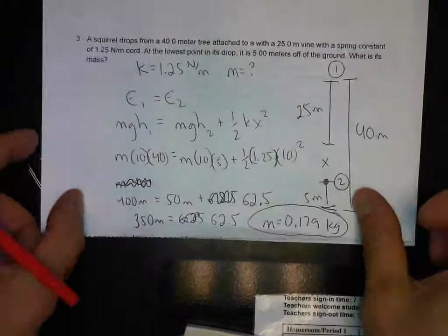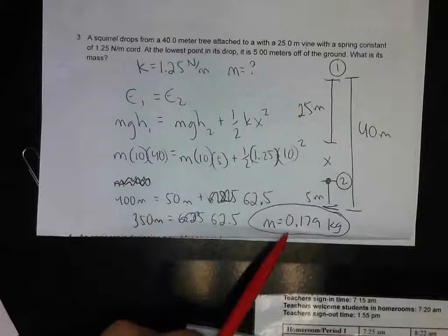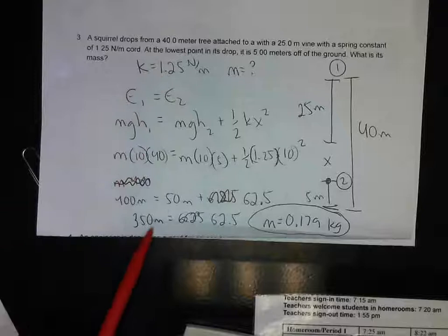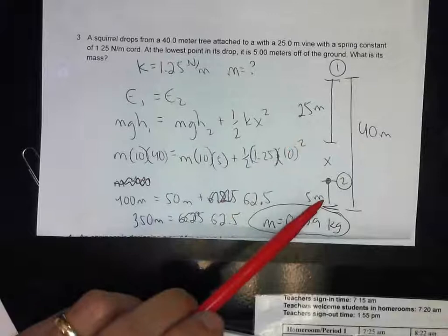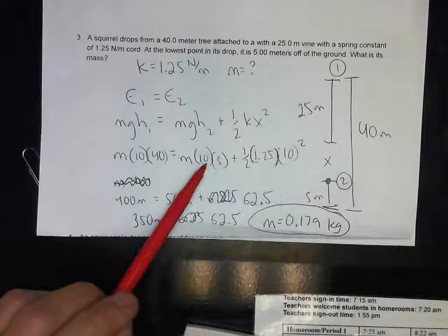The number is a bit unusual for a squirrel, but it's a small squirrel. For the other version, x equals 10, because it's 40 minus the length of the cord minus the height off the ground — 40 minus 30 equals 10. That's the stretch.